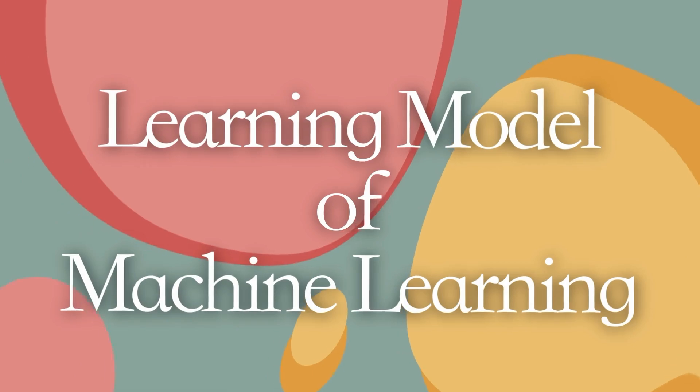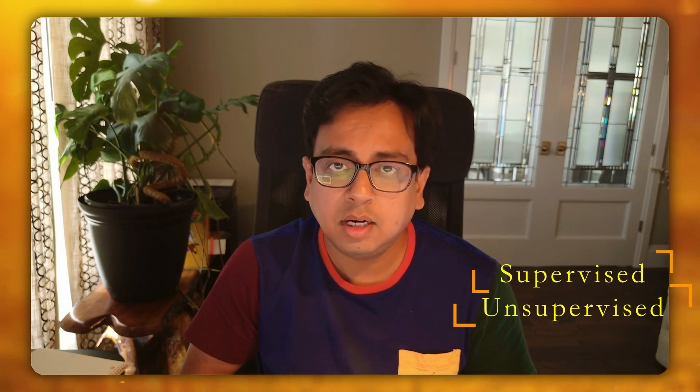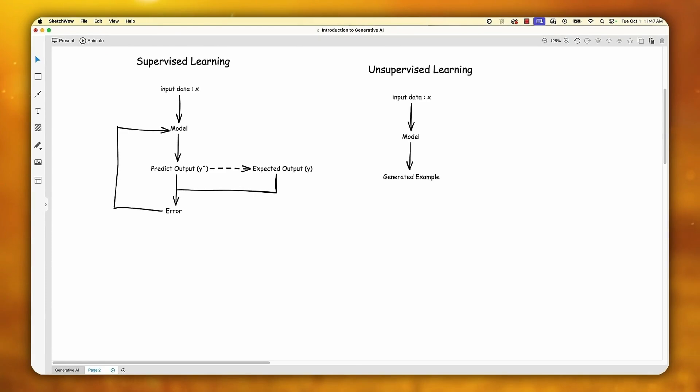Let's understand the learning models of machine learning. Machine learning is a subset of artificial intelligence used to train a model based on input data. There are two types of ways it learns: supervised learning and unsupervised learning. In the supervised learning model, input data X is passed to the model and the model predicts an output. The predicted output is compared with the expected output, and if the differences are too large, it results in an error, and the model tries to predict another output to reduce that difference.